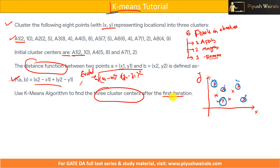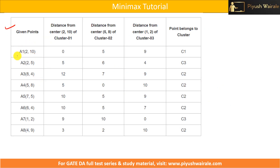So first, I will find out the distance between a1 and all three centroids, then a2 from all centroids, then a3 from all centroids using this formula. Now, my centroid is 2,10 which is a1 itself, so the distance will be 0. Distance between this centroid and the next point: |2−5| = 3 plus |10−8| = 2, so 3+2 = 5. Similarly, |1−2| = 1 plus |10−2| = 8, giving 1+8 = 9. Once I calculate the distance from all three centers, it is 0 for C1, so I classify a1 to cluster C1.